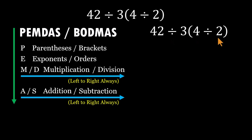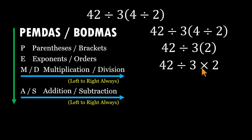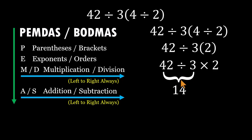Now let's do this properly. Step 1: handle the parentheses — 4 divided by 2 gives us 2. The expression becomes 42 divided by 3 times 2. This is exactly where most mistakes happen. We've got a division and a multiplication side by side — equal priority — so we go left to right. Start at the far left: 42 divided by 3 is 14. Then continue across: 14 times 2 equals 28.